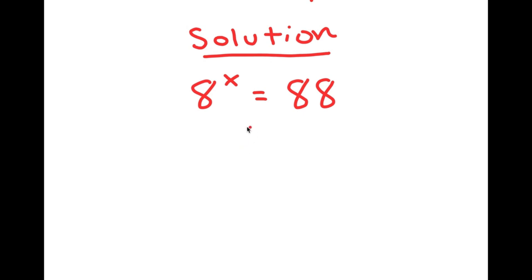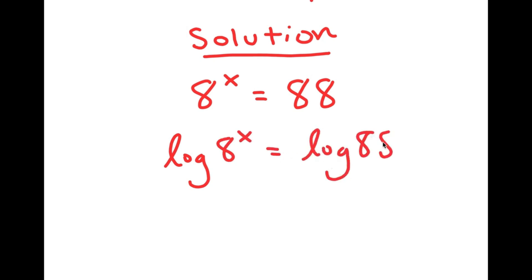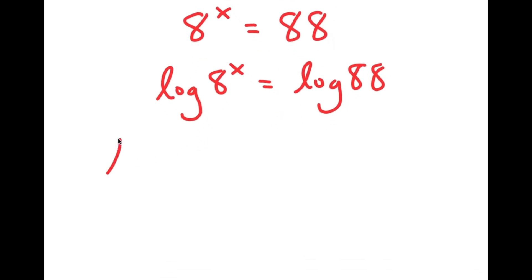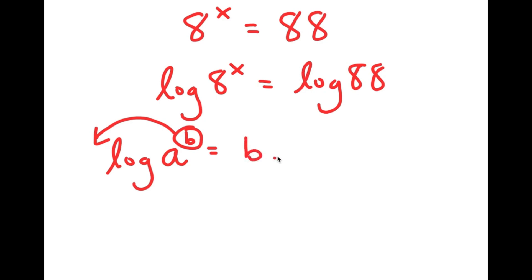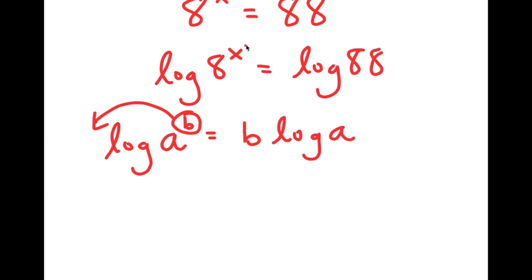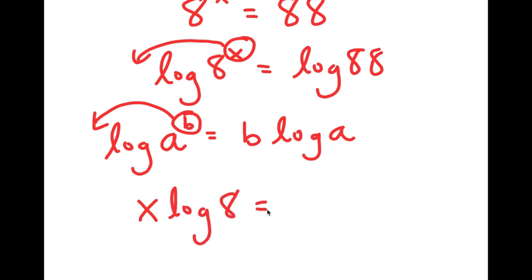I'm first going to start by taking the log on both sides, so I get log of 8 to the power of x is equal to log of 88. Now, if I have something in the form log of a to the power of b, I can move this exponent b to the front, so it equals b times log a. In this case, I have log 8 to the power of x, and I can move x to the front, so I get x times log 8 is equal to log 88.